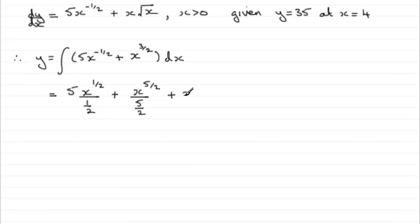And then the point about this is, don't forget that constant of integration. I've called it plus c, but you can call it any letter you like. Then just tidy this up. If we multiply top and bottom here by 2, we're going to get 10x to the power half. And again, if we multiply top and bottom of the fraction by 2 here, we're going to get 2x to the power 5 over 2, all over 5, and then plus c.